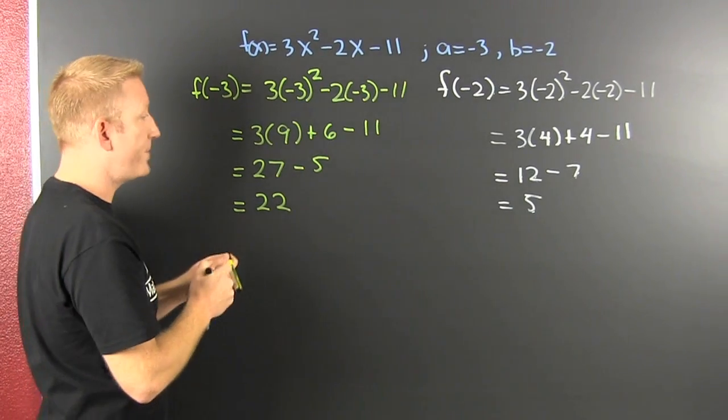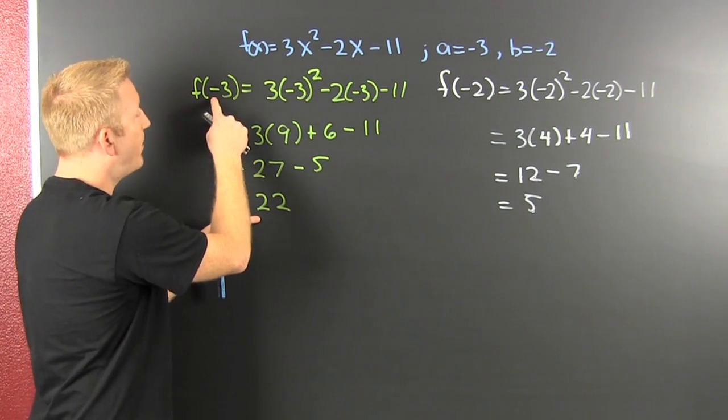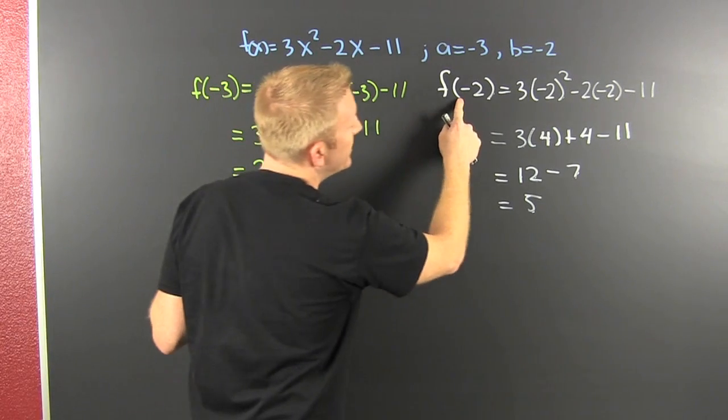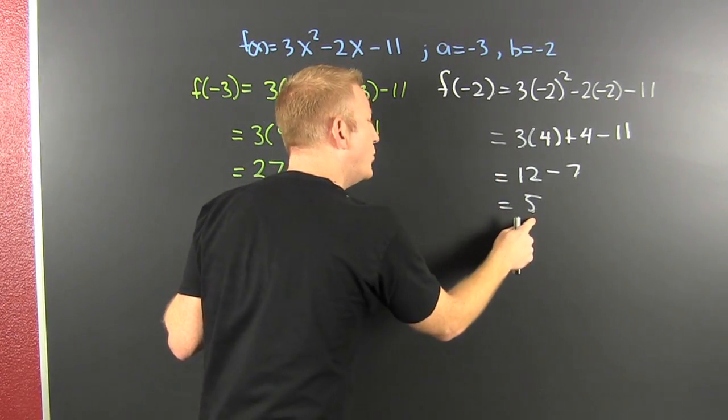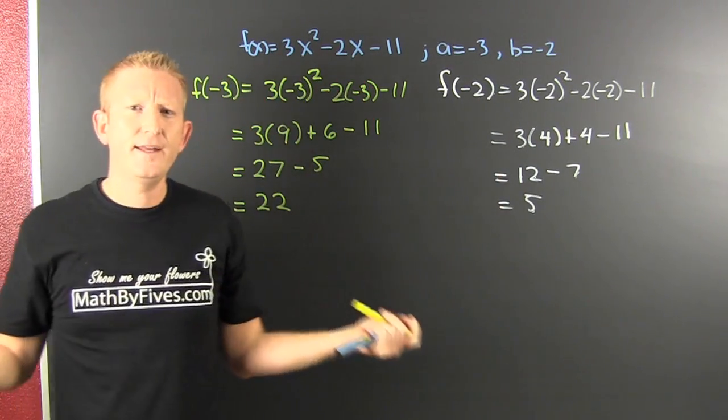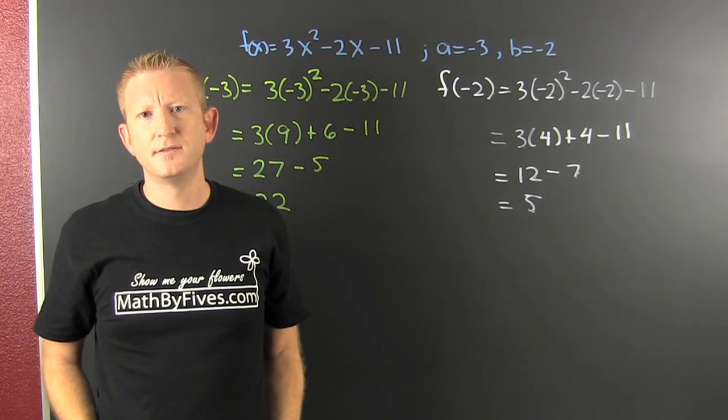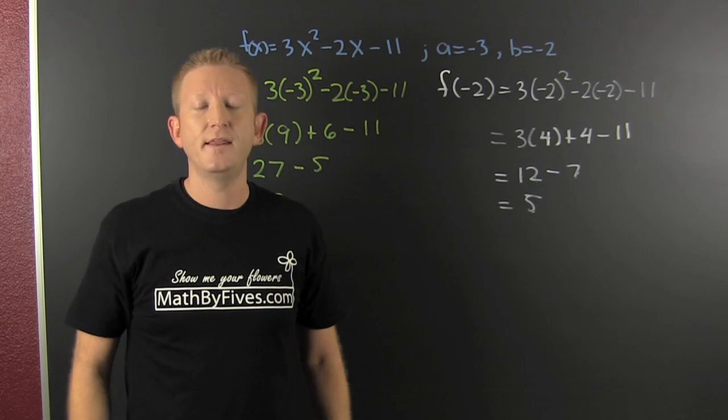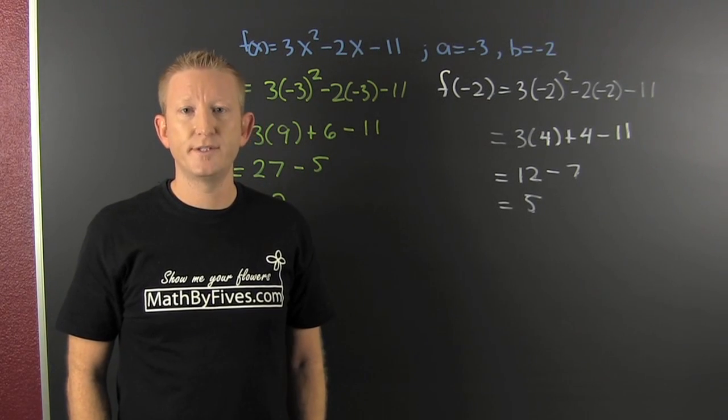So, wait. Did we get the same? Did we get opposite signs? When we evaluated the polynomial at minus three, we got twenty-two. When we evaluated the polynomial at minus two, we got five. Are they the same or opposite signs? They're not opposite signs. So does that mean there doesn't exist a zero in between there? That means it's inconclusive.